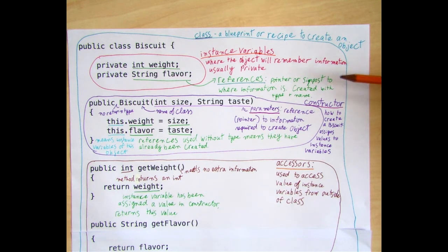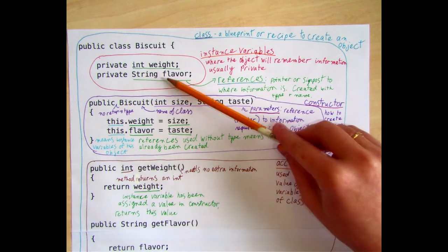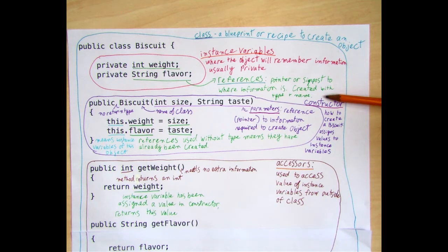To make a reference, you have to write the type of thing that will be stored in that space, and then the name of how you want to be able to call that space — the name you're giving to that piece of information.